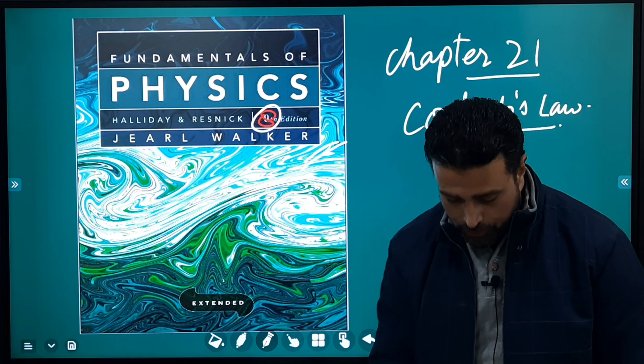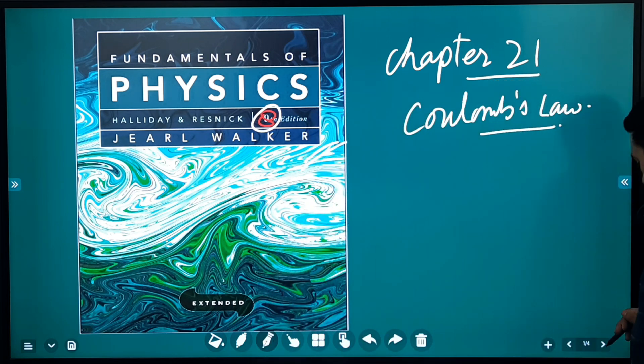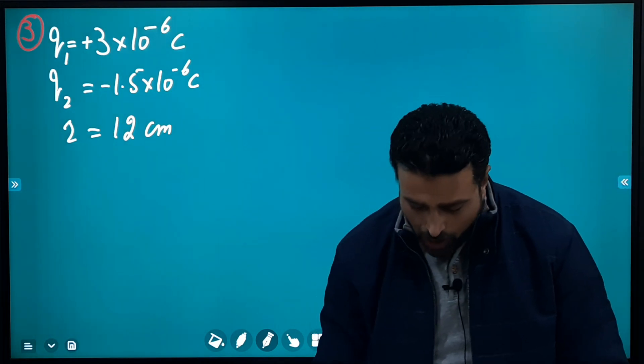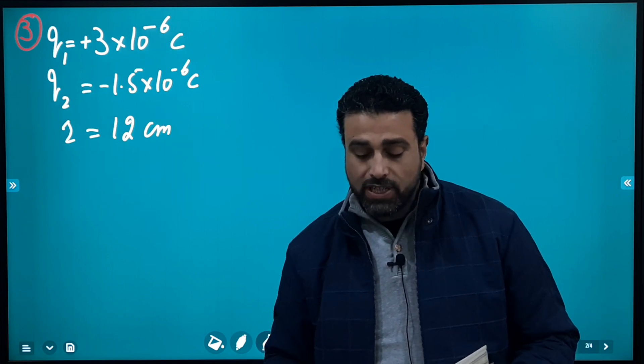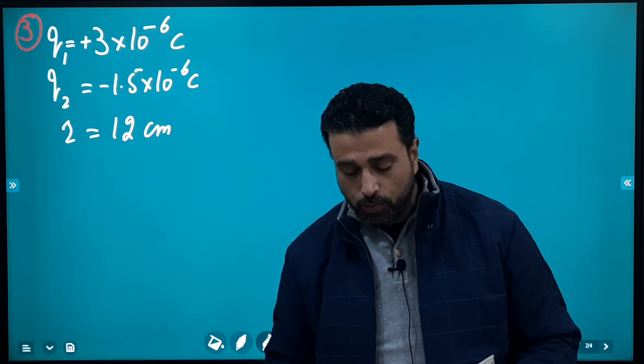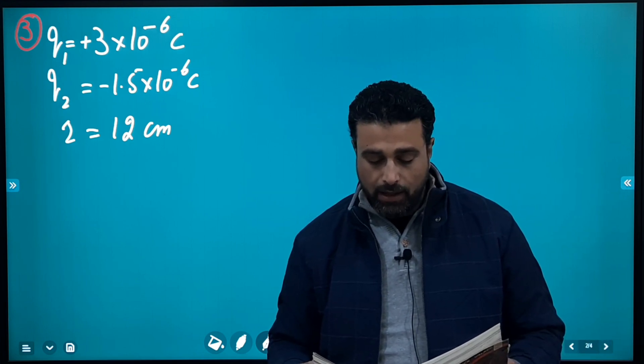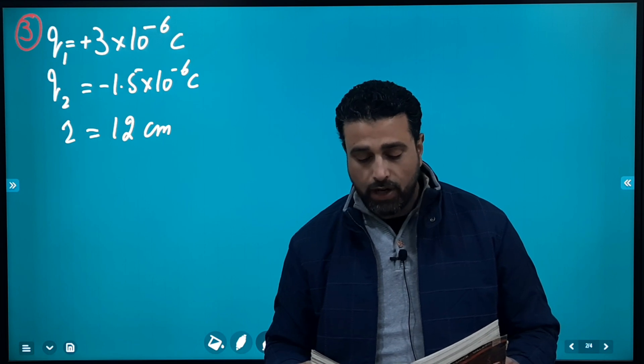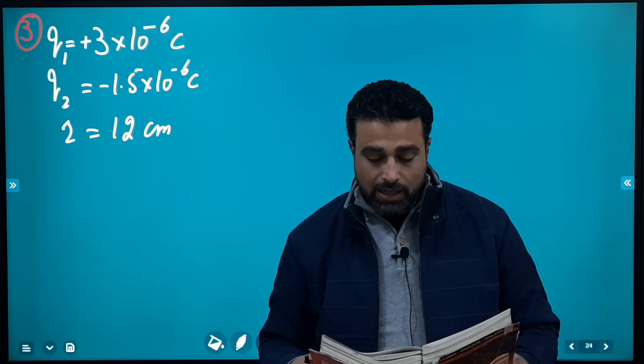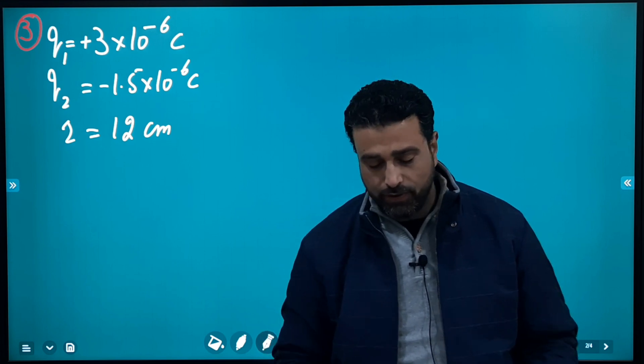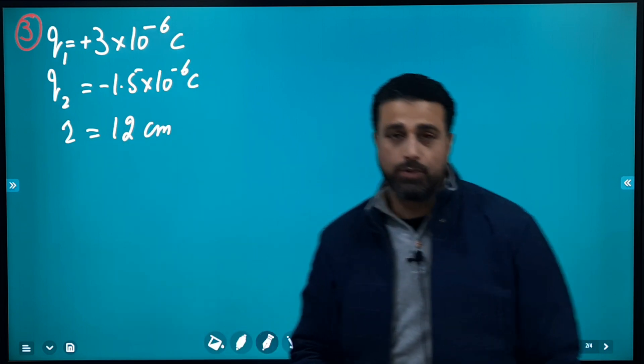I'm solving problem number three in this session. I've already written data here. We have one of the simplest possible questions: a particle of charge +3×10⁻⁶ coulombs is 12 centimeters distant from a second particle of charge -1.5×10⁻⁶ coulombs. Calculate the magnitude of the electrostatic force between the two particles. So extremely simple - we are given two charges and distance, we have to find out force between them.